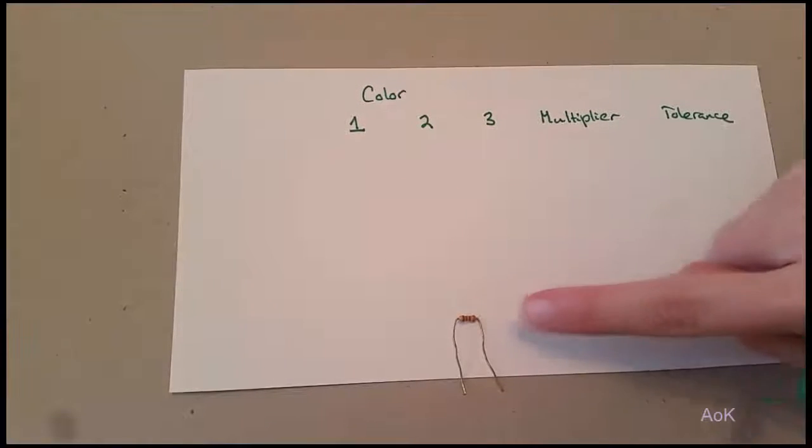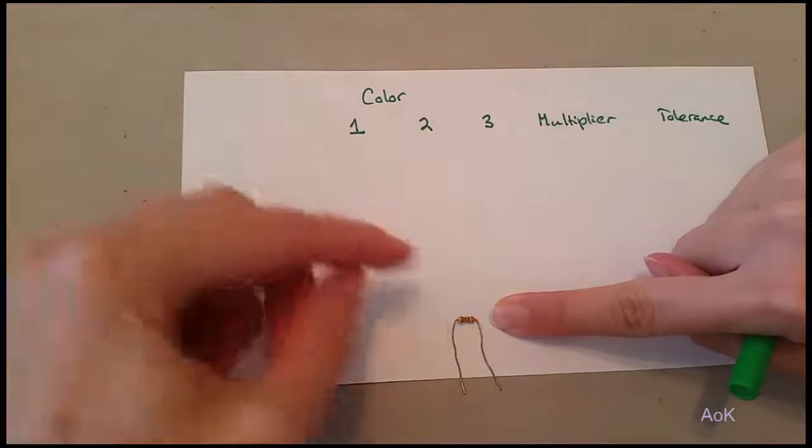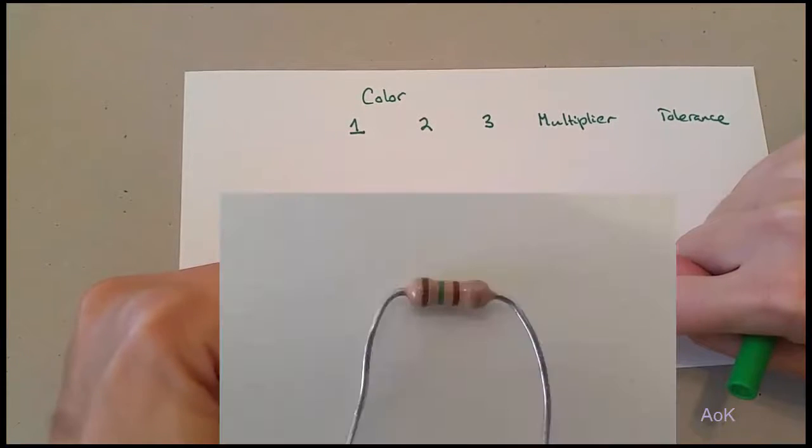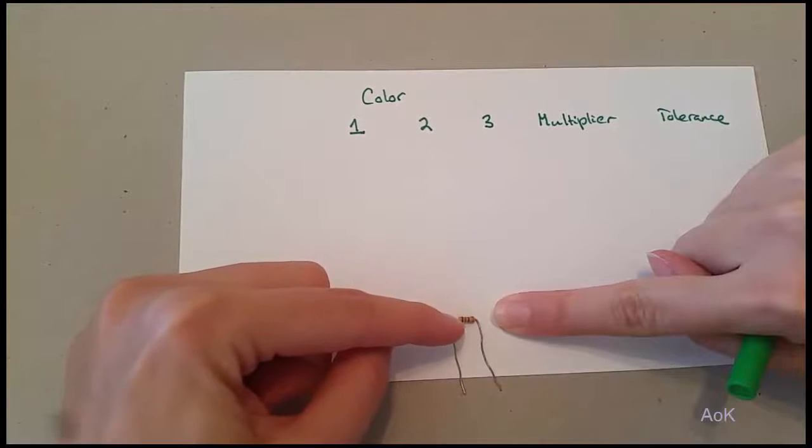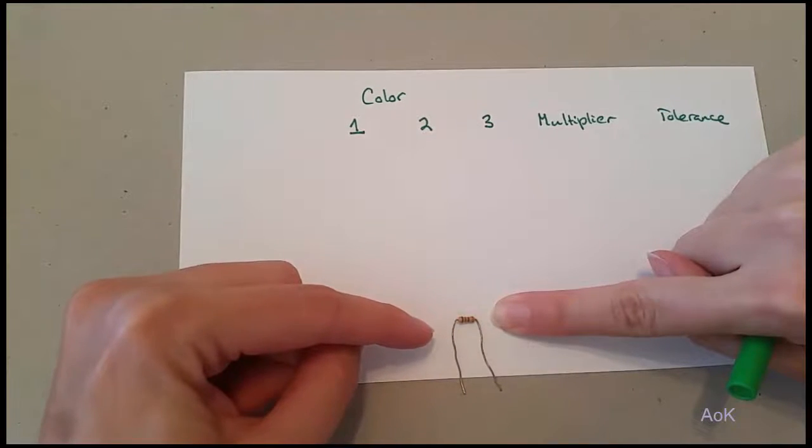Figuring out the resistance of a resistor can be quite challenging because the resistor is too small for them to stamp on the actual value. Instead, they use color codes in little lines that will let you know what the value is.